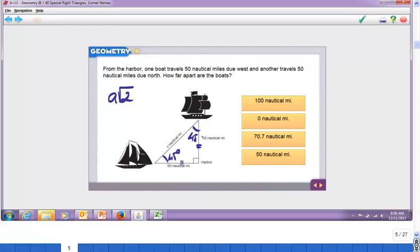But your side is given here, which is 50, so your hypotenuse is going to be 50 square root 2.